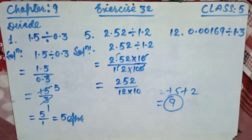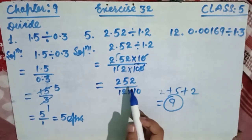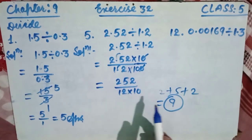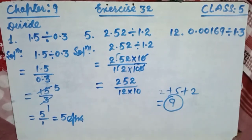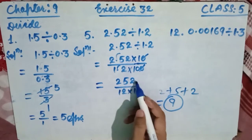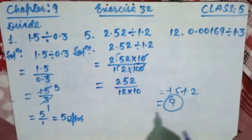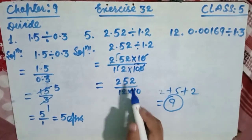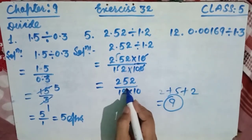Since 252 is divisible by both 2 and 3, as we discussed in the previous lecture, it is also divisible by 6. Similarly, 12 is divisible by 6. So we divide both 252 and 12 by 6.